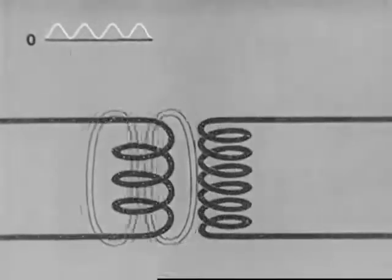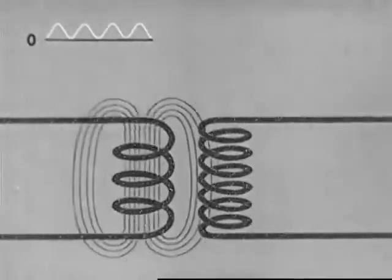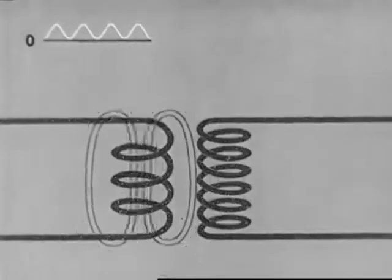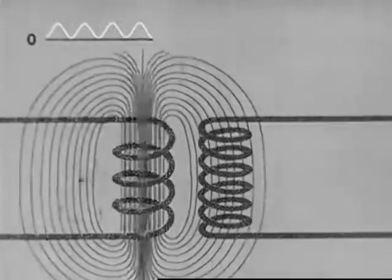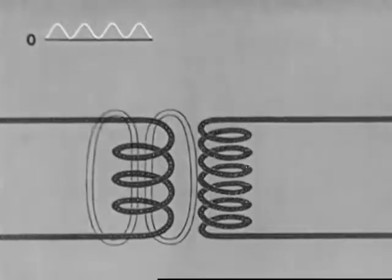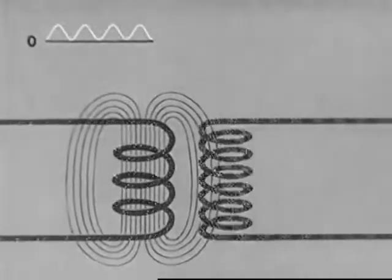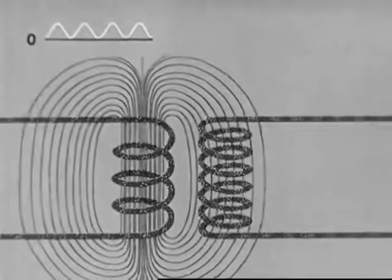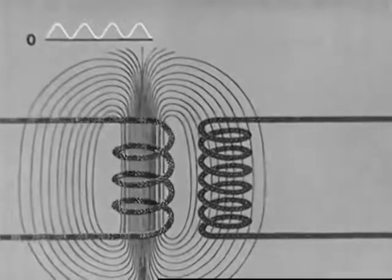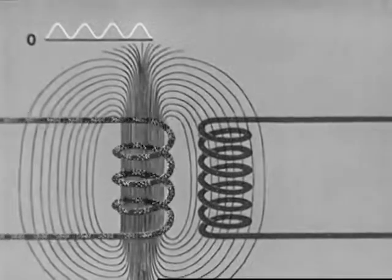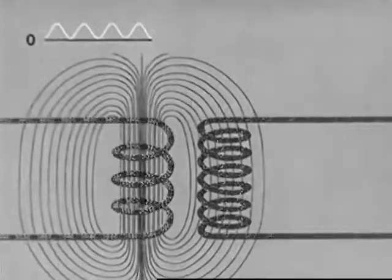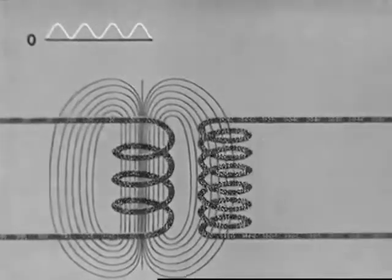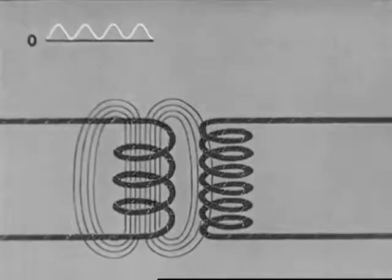In this schematic transformer, the primary coil, which is a part of the transmitter circuit, is at the left, and the secondary coil is at the right. As the current increases in the primary coil, it builds up a magnetic field which sweeps across the loops of the secondary and starts a flow of electrons. When current in the primary decreases, the magnetic field collapses, and the lines of force cut back through the secondary coil. Now electrons in the secondary flow in the opposite direction.